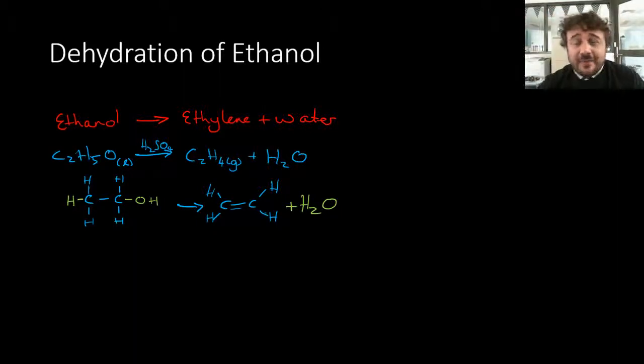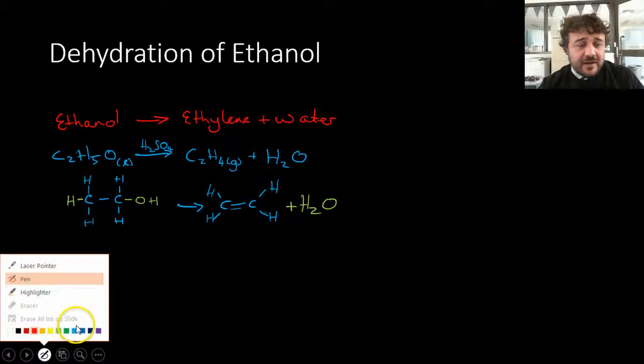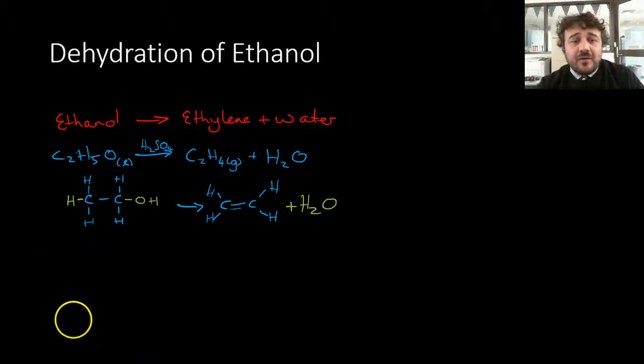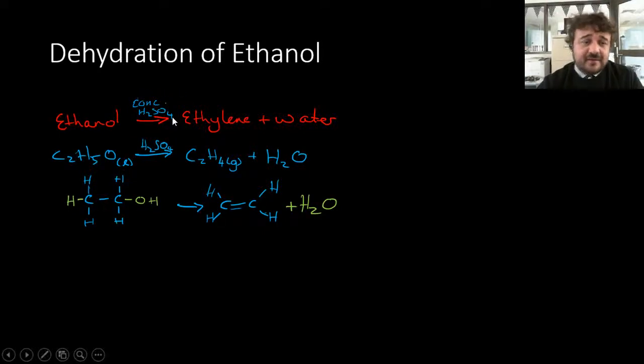Now, as we're chemists we like to know how this actually works. We'll get our color pen when we want. So basically the reaction looks like ethanol to ethylene plus water. This is a dehydration which means it takes a water off it. But there is a catalyst required and that is concentrated sulfuric acid.